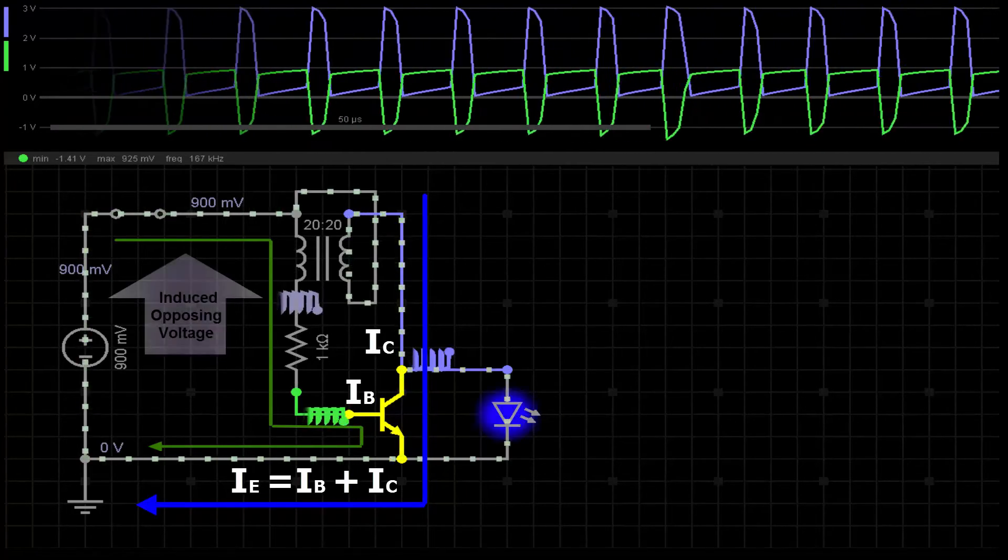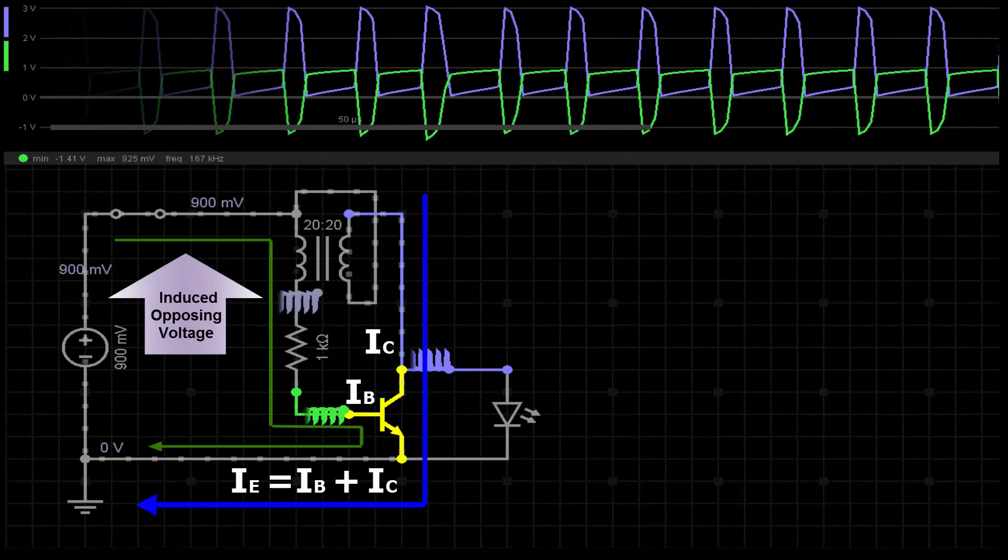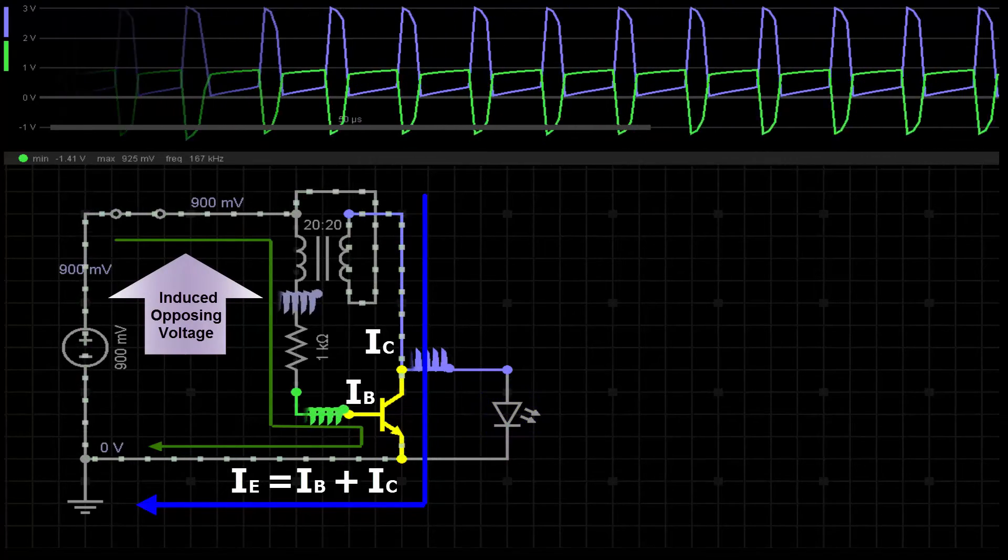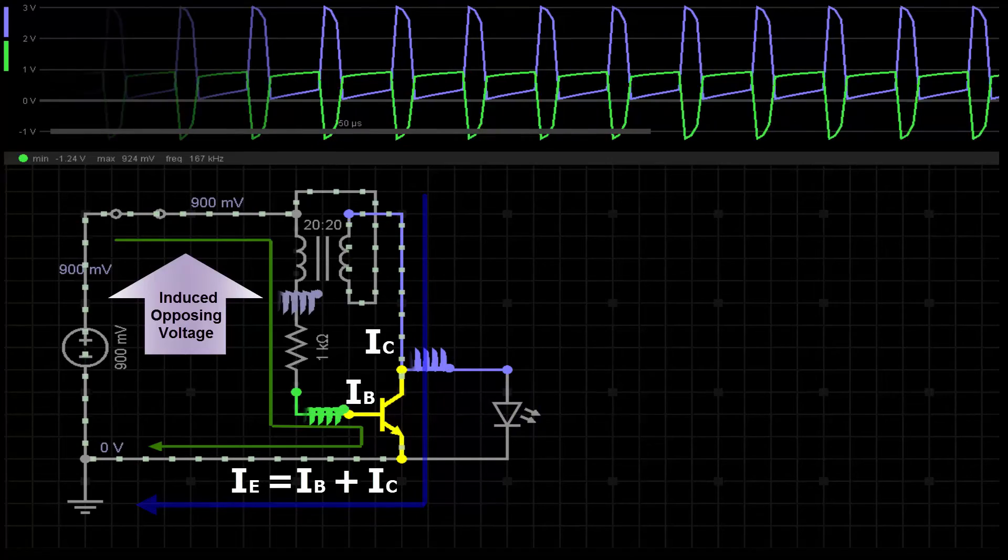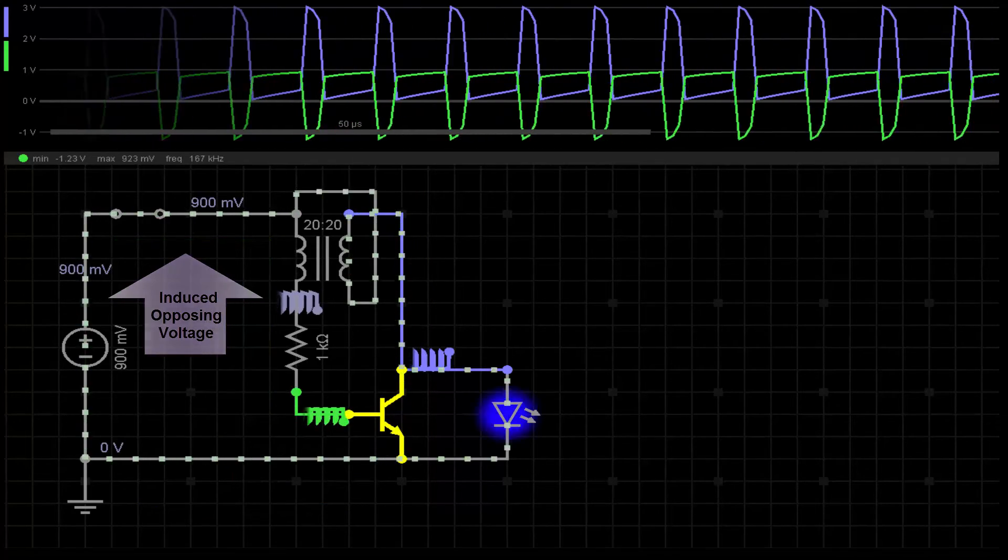a voltage in the opposite direction is induced in the first coil because of the falling current in the second coil. This negative voltage turns the transistor off very quickly.